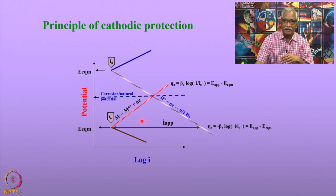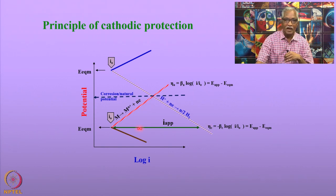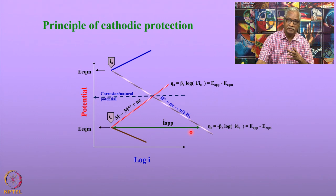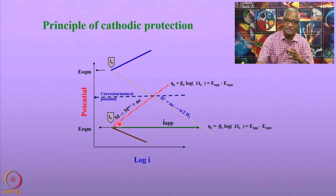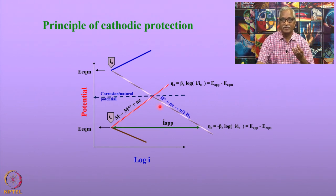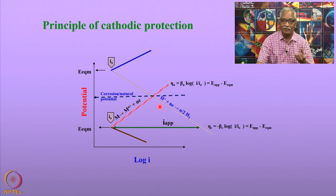The corrosion current density and corrosion potential are governed by parameters such as exchange current density for the cathodic reaction, exchange current density for the anodic reaction, and the Tafel relationships for both the anodic reaction — metal oxidation — and the cathodic reaction — reduction of species such as oxygen or H⁺ ions on the metallic surface. Depending upon the slope of either reaction, the current required for cathodic protection changes, and this slope also decides whether the applied potential is adequate to protect the metal to the desired levels.